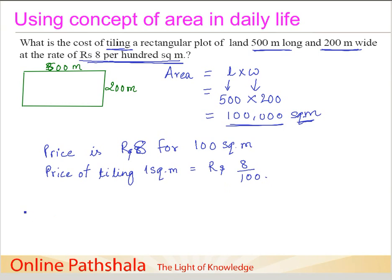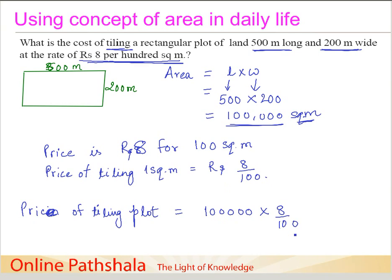Once we have this, we find the price of tiling the rectangular plot, which is the area — 100,000 square meters — multiplied by 8 divided by 100. The two zeros cancel out and we get rupees 8,000. This is how we use the concept of area.